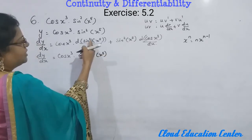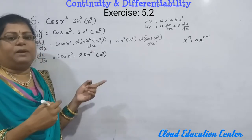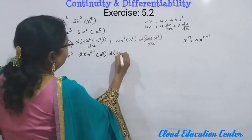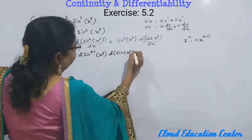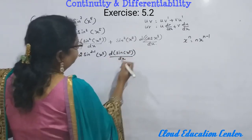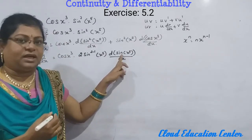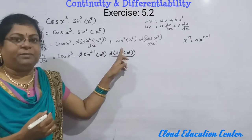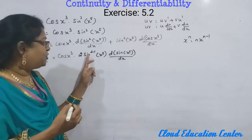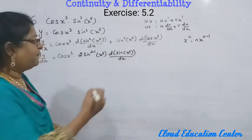Now we have differentiated the square, applying the chain rule for the square. Next we have to apply the chain rule for the sin. That means we differentiate sin(x⁵) with respect to x. When applying the chain rule for sin, we should not put the square here because the square is already resolved. Only the sin function remains, so we take sin and apply chain rule to it.